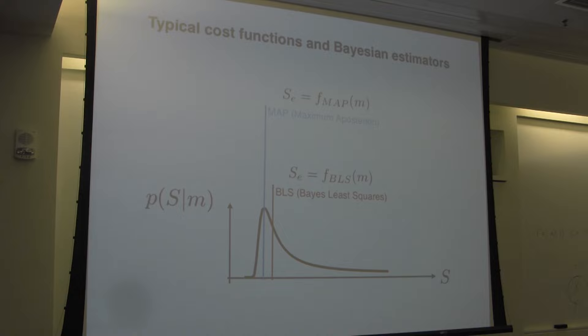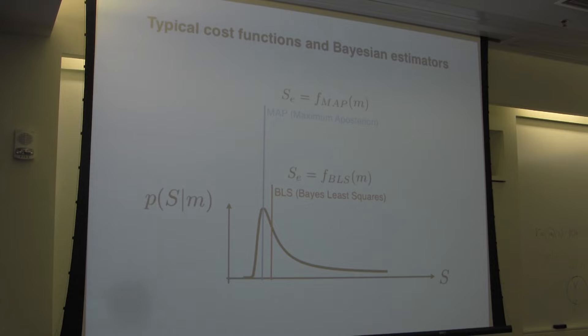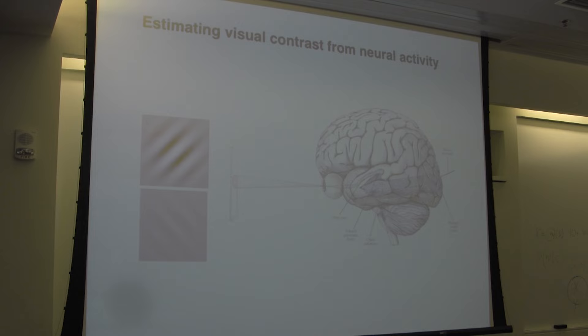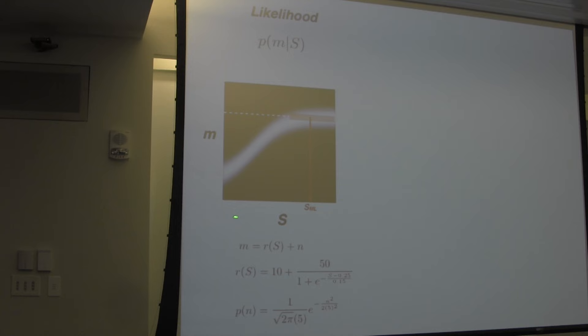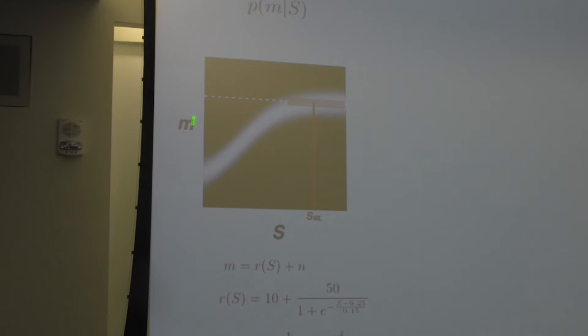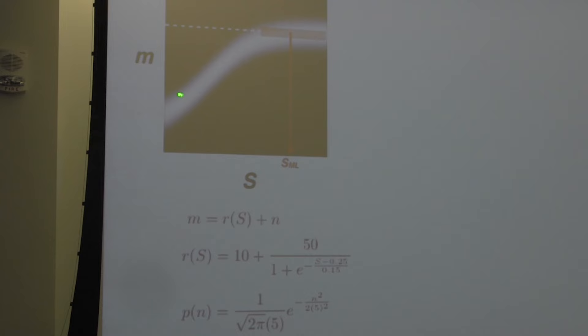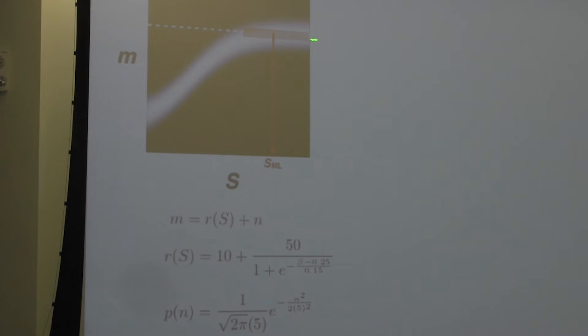Now, let's go back to our contrast estimation task and use a Bayesian estimator, except I'll give you one extra piece of information: the possible contrasts that the stimulus has — that's the prior. You know this is the likelihood we built together based on those functions. The measurement — some neural measurement, calcium signals, spiking activity, fMRI, or something the brain is using that we don't know — that's the measurement. This is the stimulus.